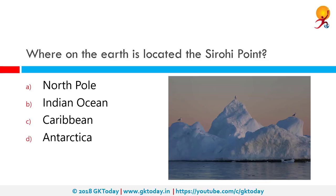Where on the Earth is the Sirohi Point located? The correct answer is Antarctica. The Sirohi Point is the first point where an Indian set foot on Antarctica as part of a research team of the United States Antarctic Research Program or USARP. It was named after Giriraj Singh Sirohi, who researched biology at McMurdo Station from 1960-61 for 100 days at subzero temperatures, and the point was named after him by the US government.